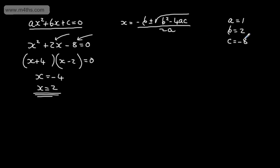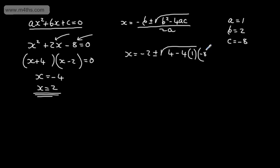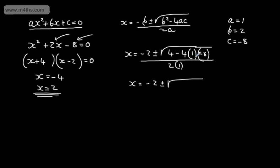It's really quite important that we keep the negatives in. Substituting in, x is going to be equal to minus b, so we're going to have minus 2, plus or minus the square root of b squared — well, b squared is going to be 4 — then we're going to have minus 4 lots of a, which is 1, multiplied by c, which is negative 8. We're going to put all of that over 2 lots of a, which gives us 2 lots of 1.